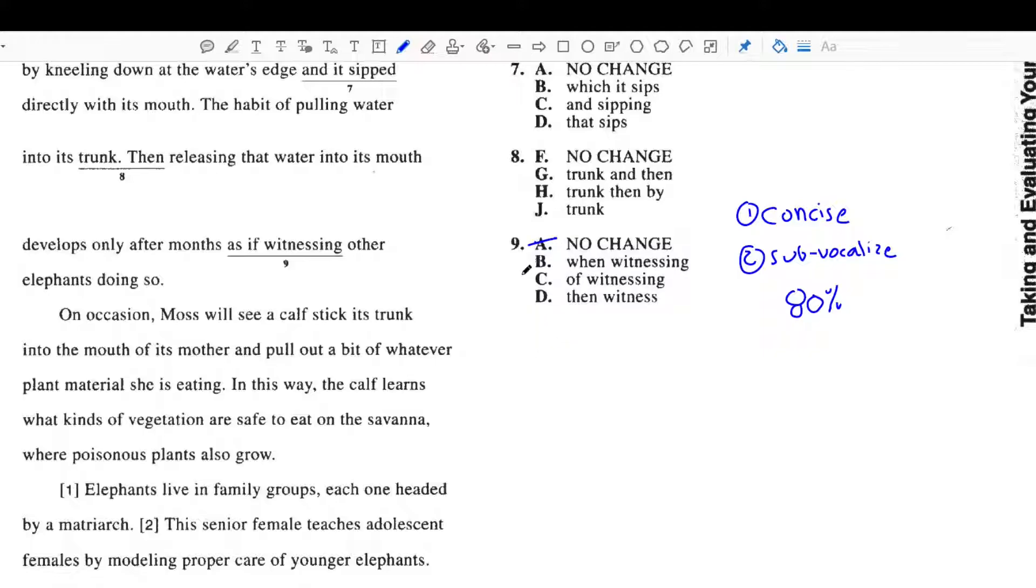So I know A is out for both of those reasons, and I'm left with B, C, and D, so the best bet would be to sub-vocalize each of them because all three of them are equally concise. So why don't you take a minute and try that on your own?